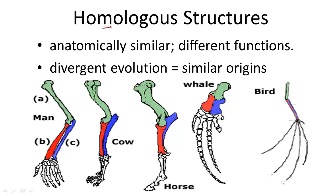Homologous structures. Homologous structures are anatomically similar structures with different functions.